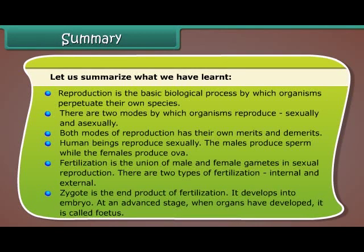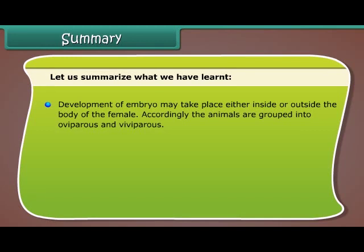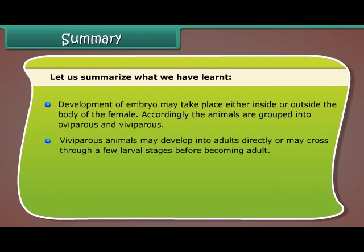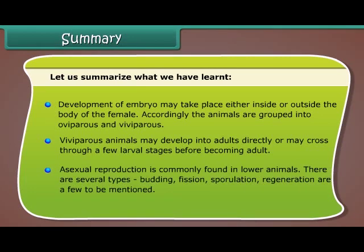Zygote is the end product of fertilization. It develops into an embryo, and at an advanced stage, when organs have developed, it is called a fetus. Development of the embryo may take place either inside or outside the body of the female; accordingly, animals are grouped into oviparous and viviparous. Young animals may develop into adults directly or may pass through larval stages before becoming adult. Asexual reproduction is commonly found in lower animals and includes several types: budding, fission, sporulation, and regeneration.